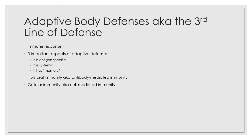There are two separate but overlapping arms of the adaptive defense system: humoral immunity (antibody-mediated immunity) and cellular immunity (cell-mediated immunity). In humoral immunity, it is provided by antibodies — immune proteins present in the body's fluids. When lymphocytes themselves defend the body, it is cell-mediated immunity. The cellular arm has cellular targets — virus-infected cells, cancer cells, and cells of foreign grafts. The lymphocytes act against such targets either directly by lysing the foreign cells, or indirectly by releasing chemicals that enhance the inflammatory response or activate immune cells.